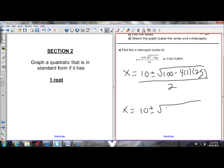So x equals 10 plus or minus. And we always simplify under the radical next. 100 minus 4 times 1 times 25. 4 times 25 is 100.